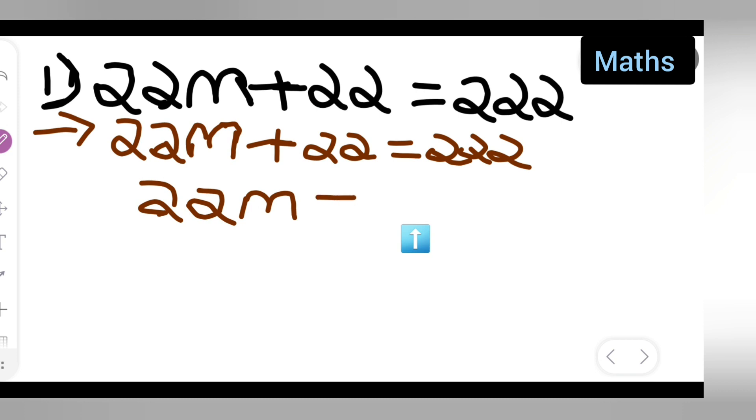Variable term is 22m is equal to 222 minus 22. We have shifted this 22 to the other side, so plus 22 will turn into minus 22. So write down 22m.